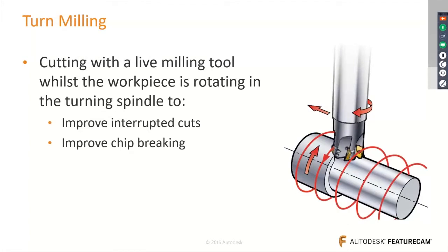In FeatureCAM, you can use turn-milling applications where you use a live milling tool on a rotating workpiece. This not only improves chip-packing capacity but also improves interrupted cuts — very useful for turn-milling applications on a rotating component.